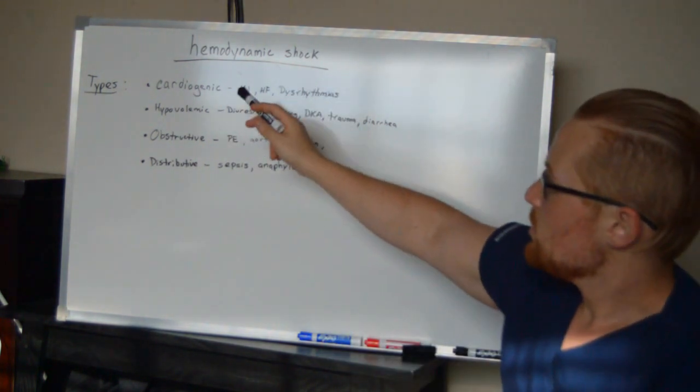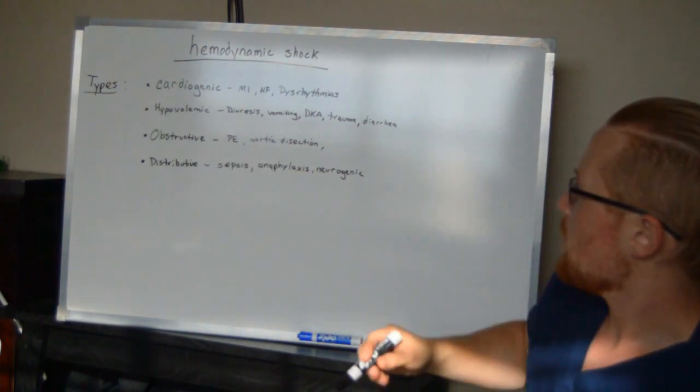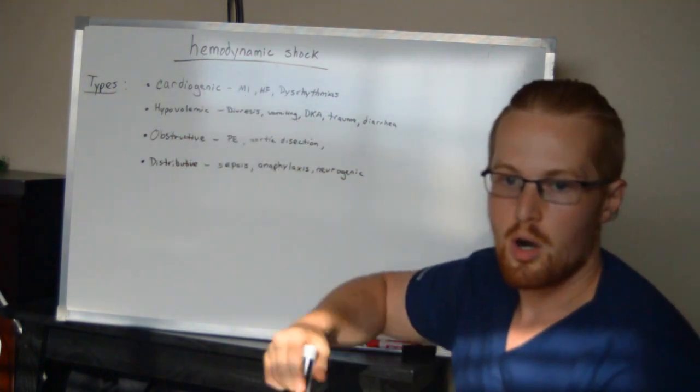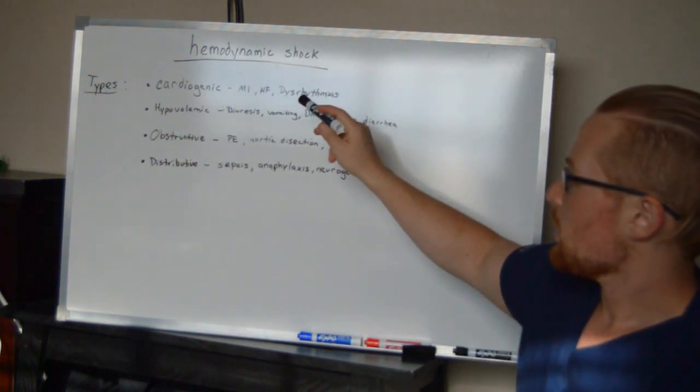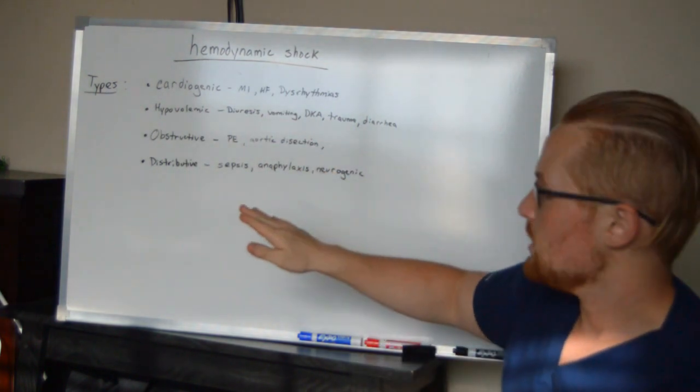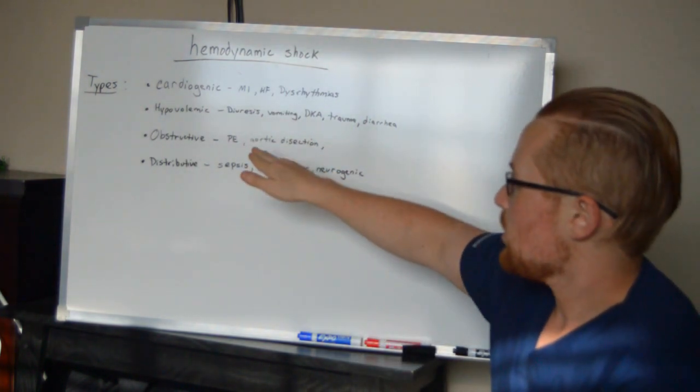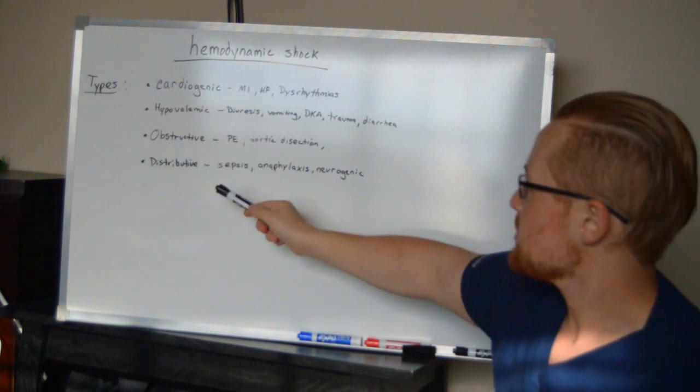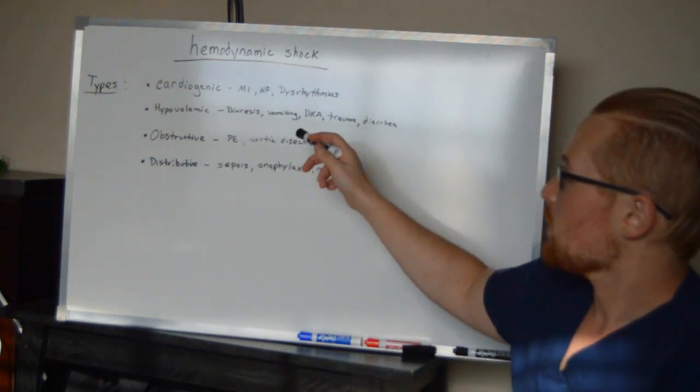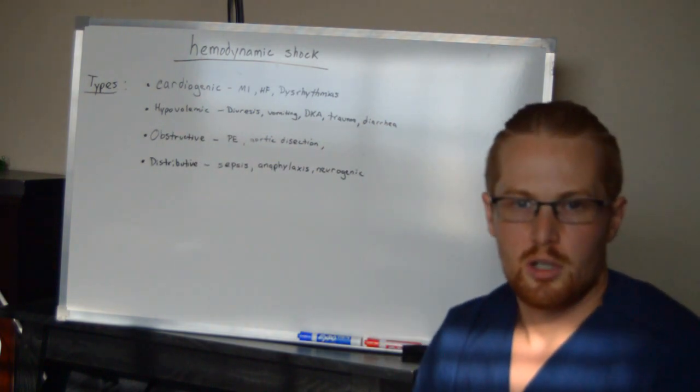And so you can see there's a bunch of different types here, whether it's a distributive, hypovolemic, problems with the heart. And so when it comes to shock, you've got to figure out what type of shock is it and then you're going to see treatment depends on the type of shock. I'm not going to treat sepsis the same way I'm going to treat an aortic dissection. And so that's what we're going to cover in the next subsequent videos.